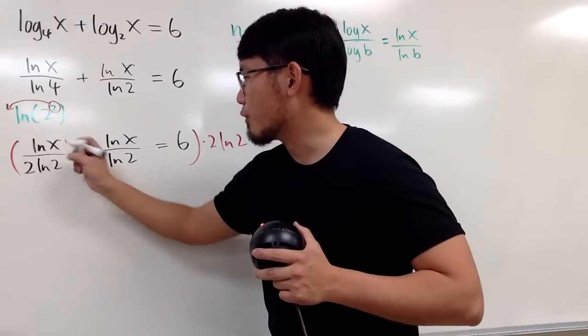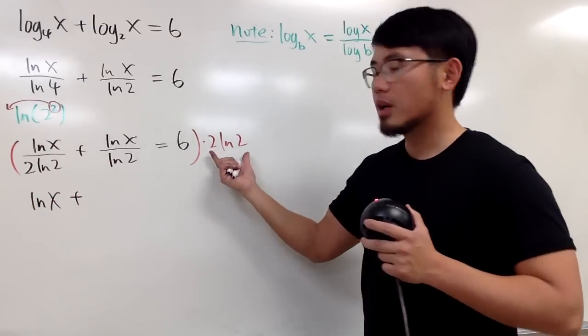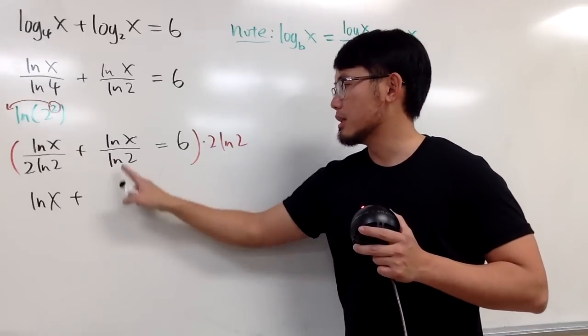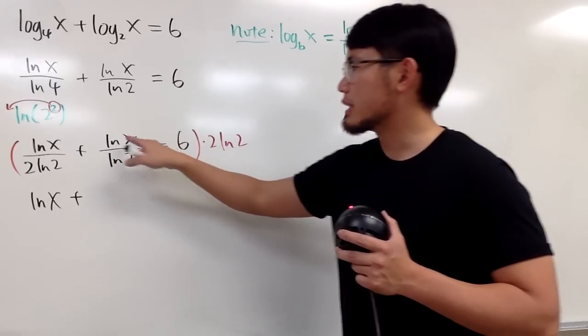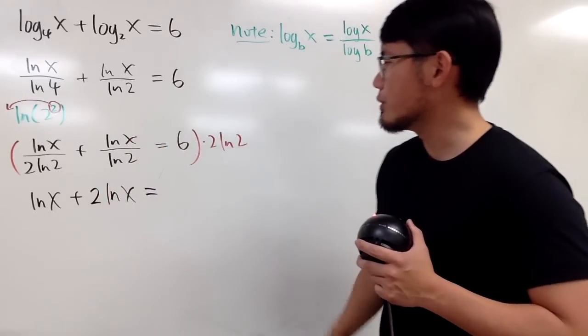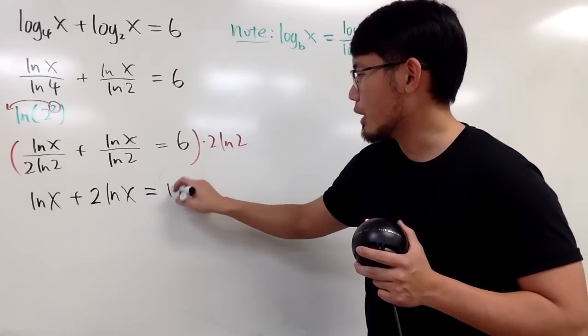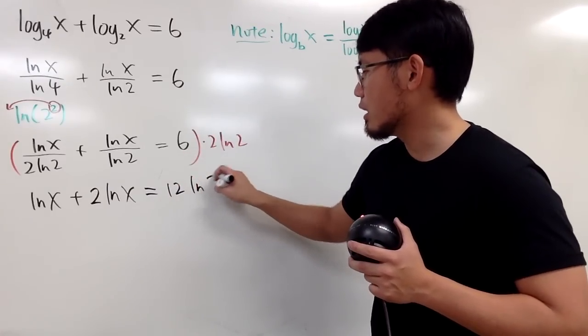Okay, when we multiply this and that, of course, they cancel, and we just get natural log of x, and we add. When we do this times that, natural log of 2 cancel. So, we have 2 times this, so I put down 2 natural log of x, and this is equal to, when we do 6 times 2 is 12, and then we have the natural log of 2.